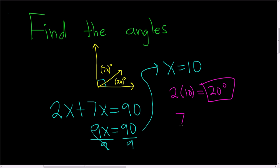And our second angle is simply 7 times 10, so 70 degrees, pretty easy. And you can check, 20 plus 70 is actually 90. And that's it.